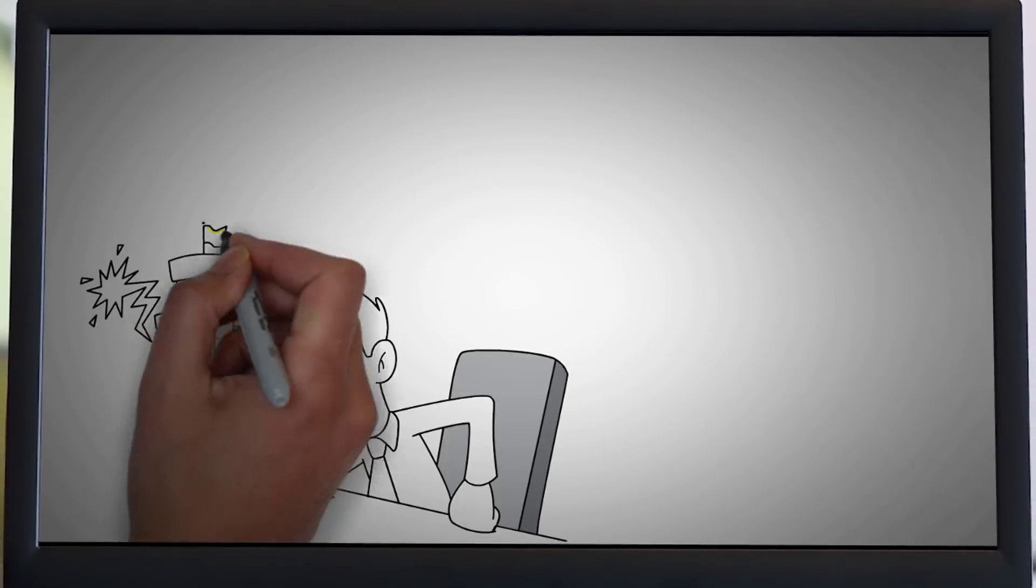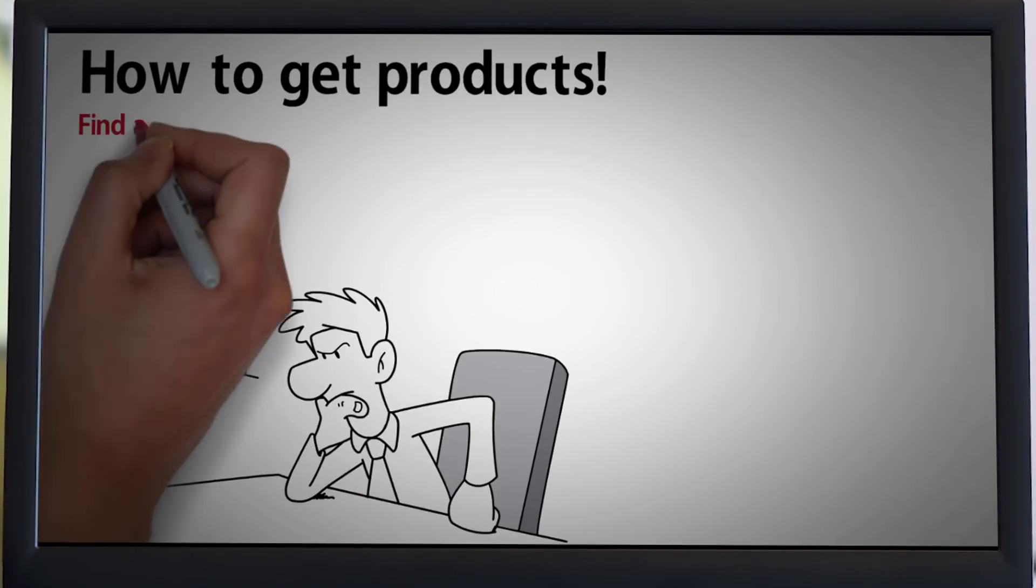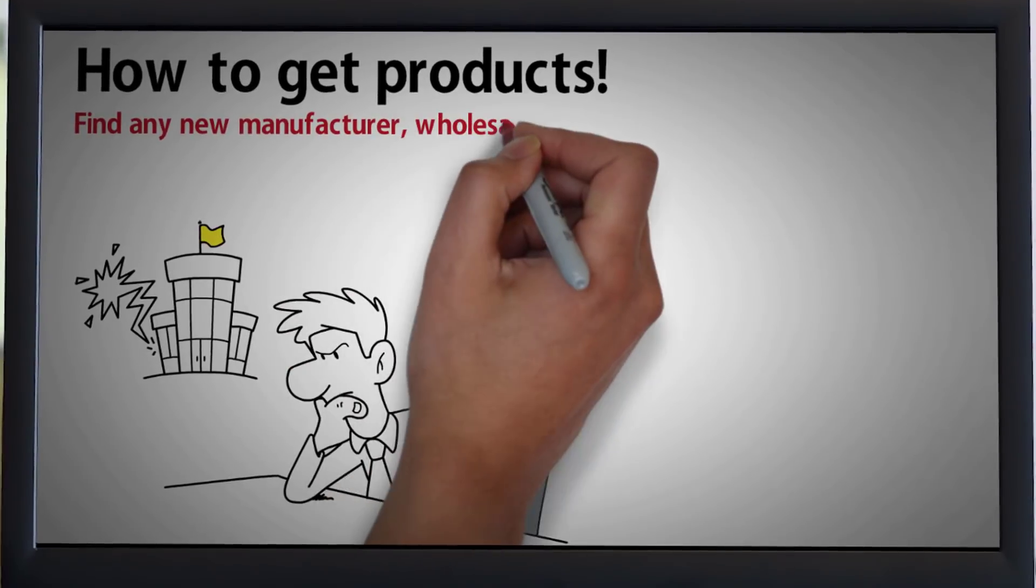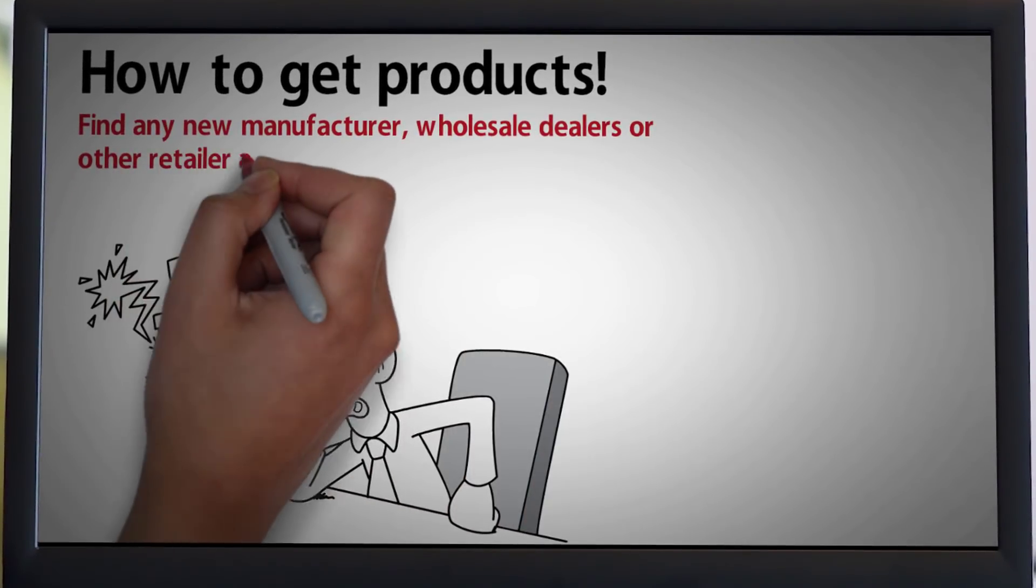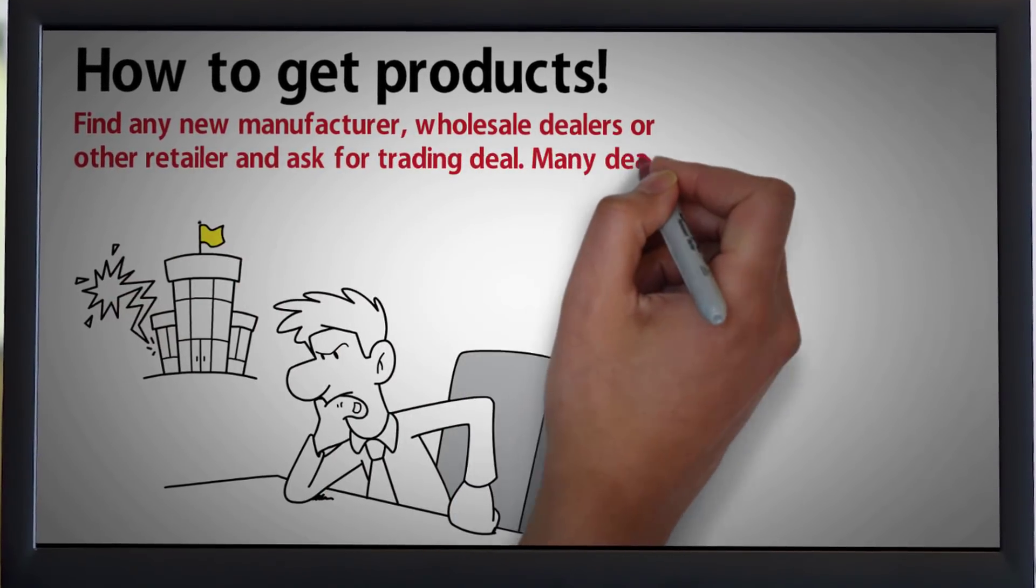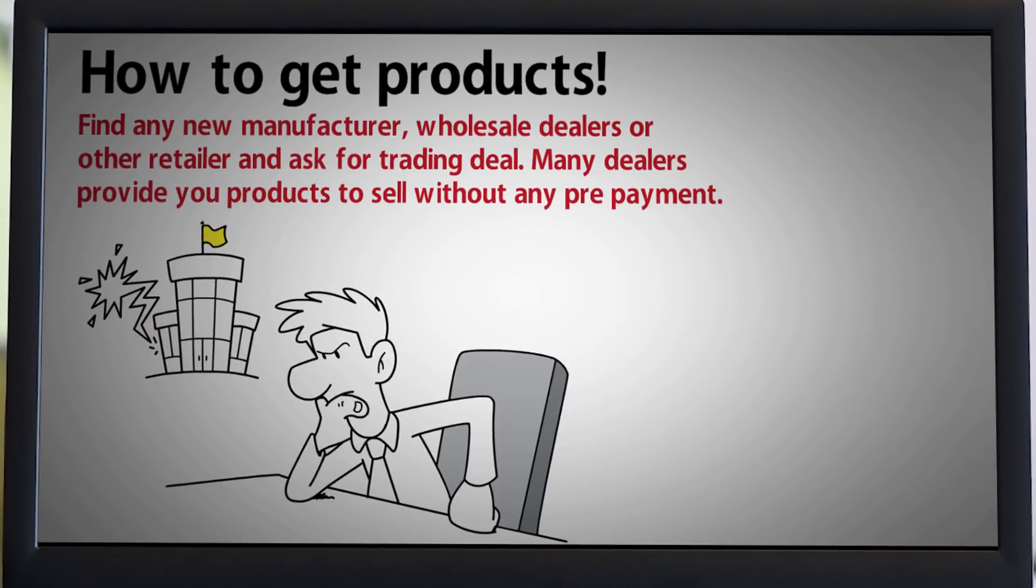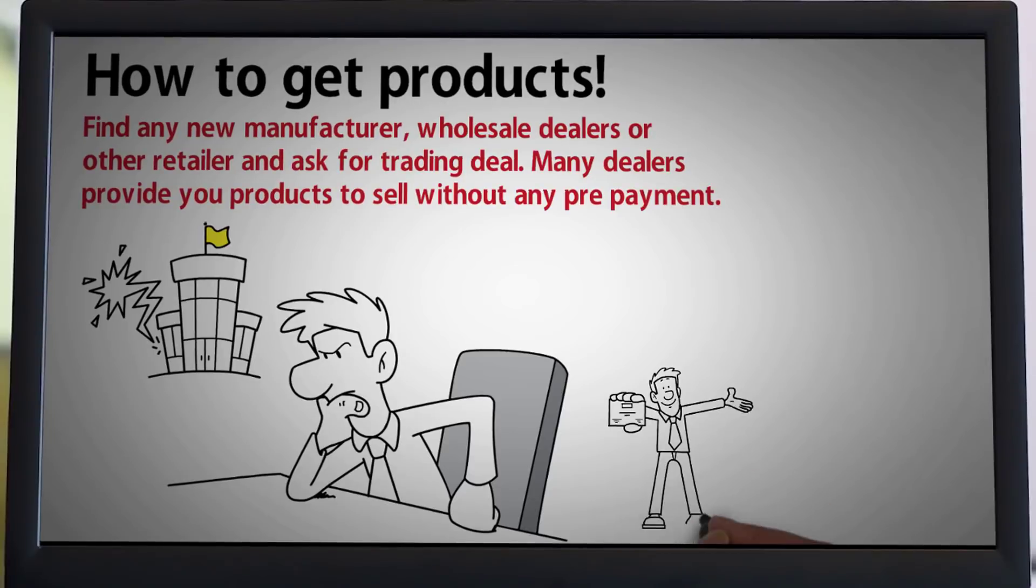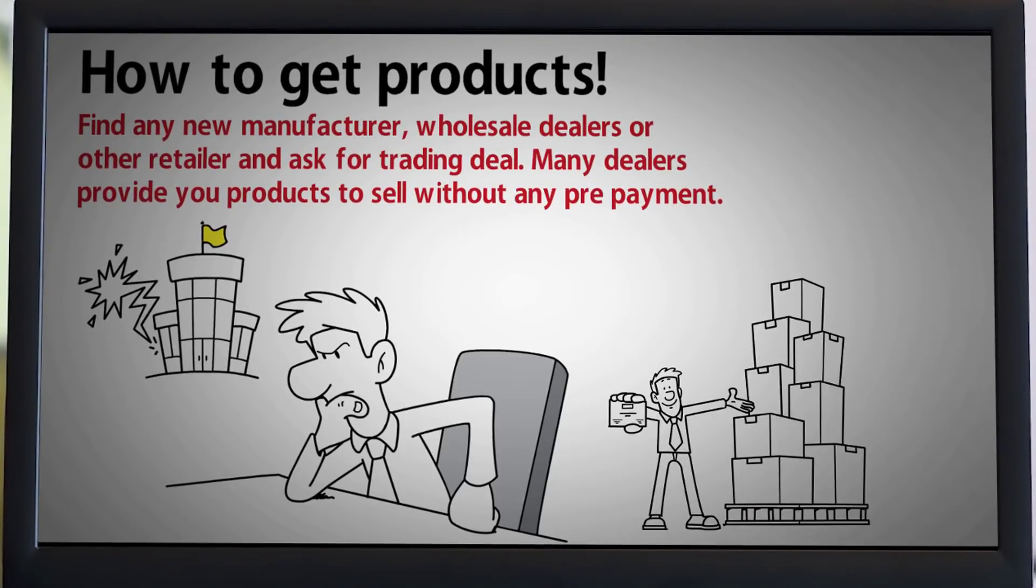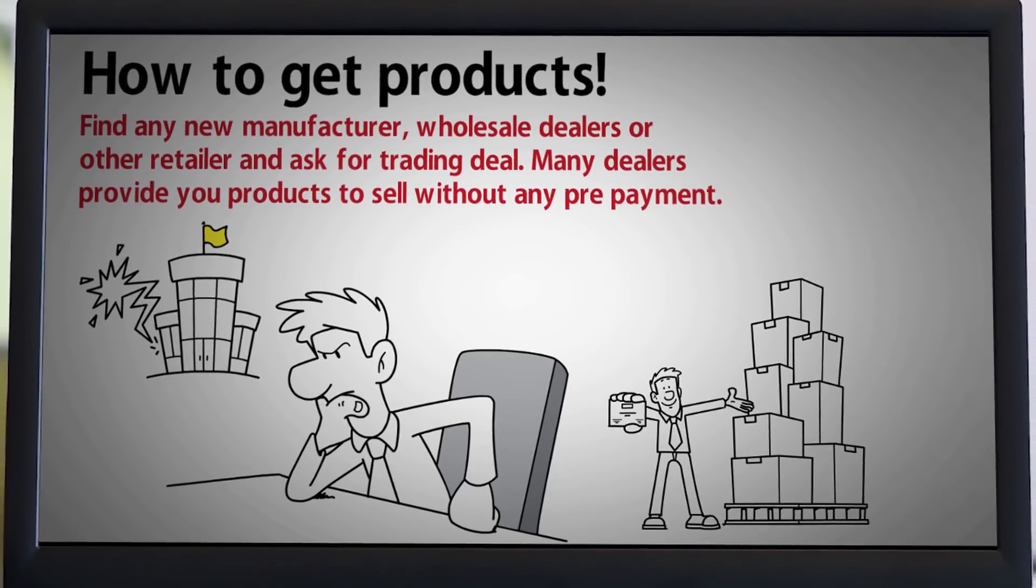Many people start excusing how to get products. Find a new manufacturer, wholesale dealers, or other retailer and ask for a trading deal. Many dealers provide you products to sell without any prepayment. You have to sell that product at your profit margin and then get your profit and save it in bank account.